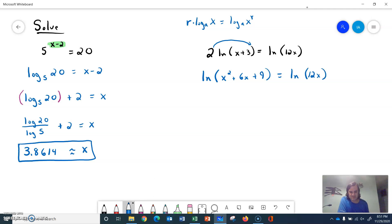So look at what we have here. We have the natural log on both sides, and they both have an argument. So if those two things are equal, the highlighted arguments x squared plus 6x plus 9 must equal 12x.